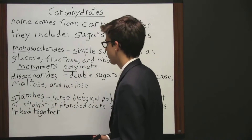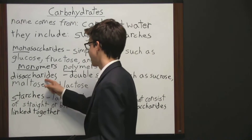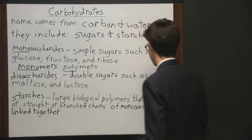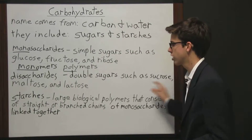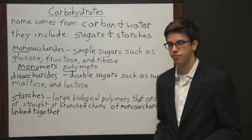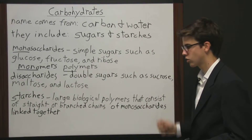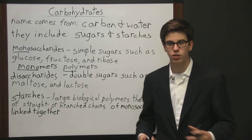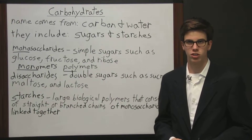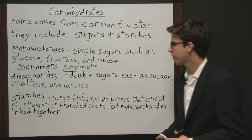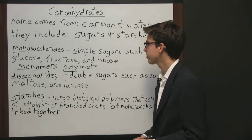The second type of carbohydrate is a disaccharide, which is a double sugar such as sucrose, maltose, and lactose. Sucrose is what we would call table sugar — it's the type of sugar you use for everyday use for baking, coffee, and that sort of thing.